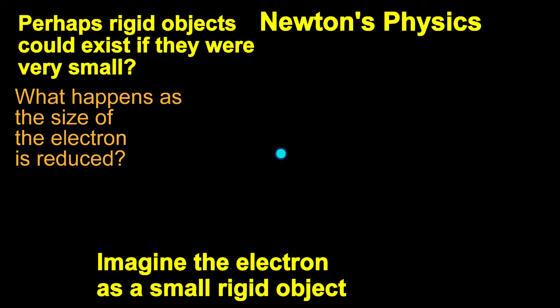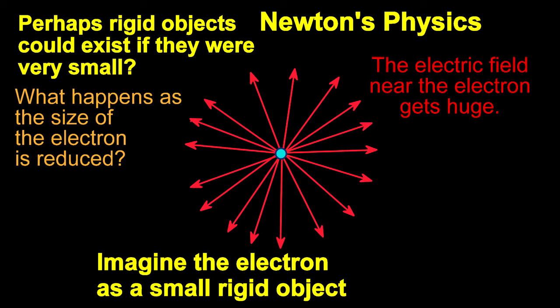We were still thinking of electrons as little rigid balls. Unfortunately, physicists ran into big problems from the electric field around the electron. As you imagine the electron smaller and smaller, the field gets very, very strong.